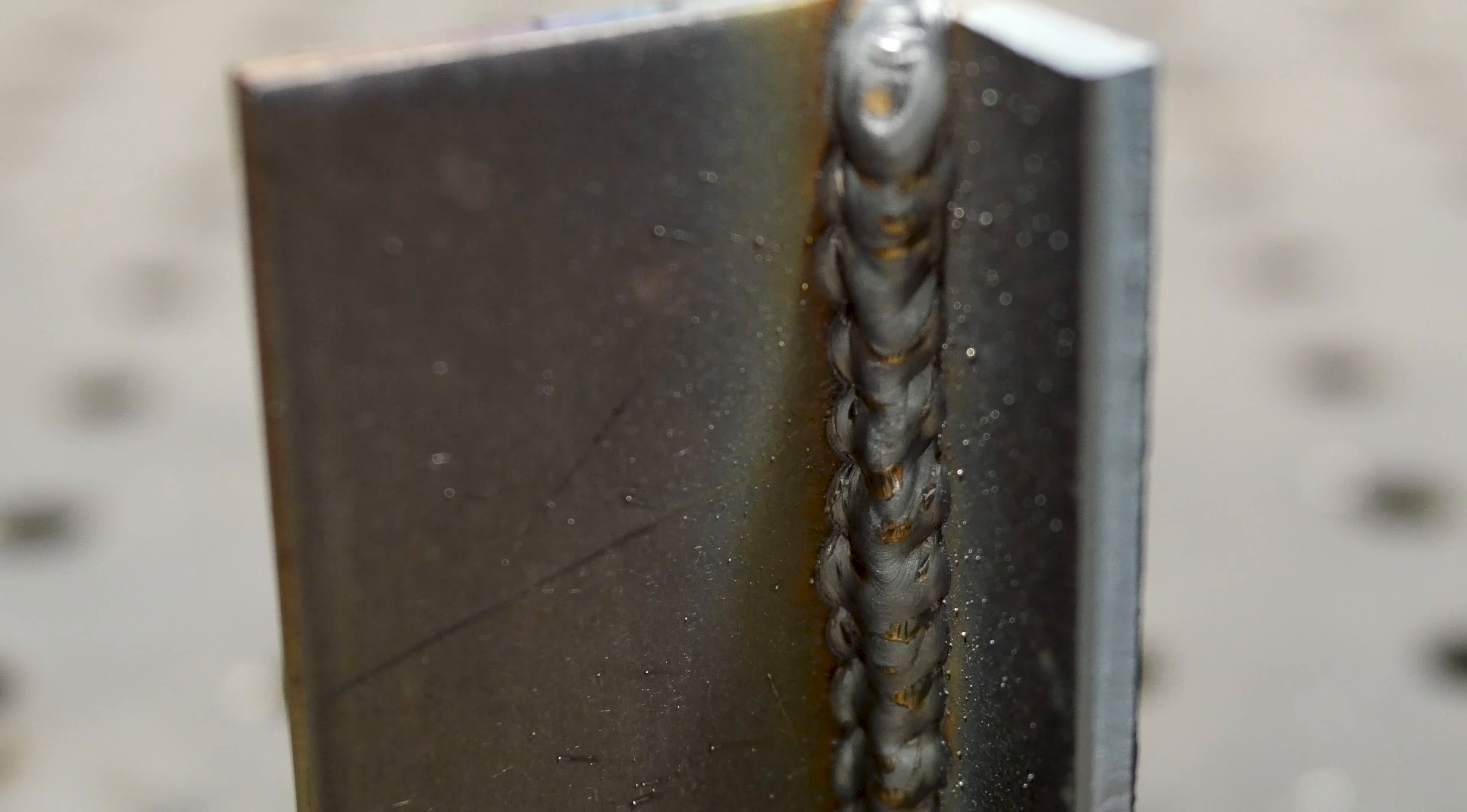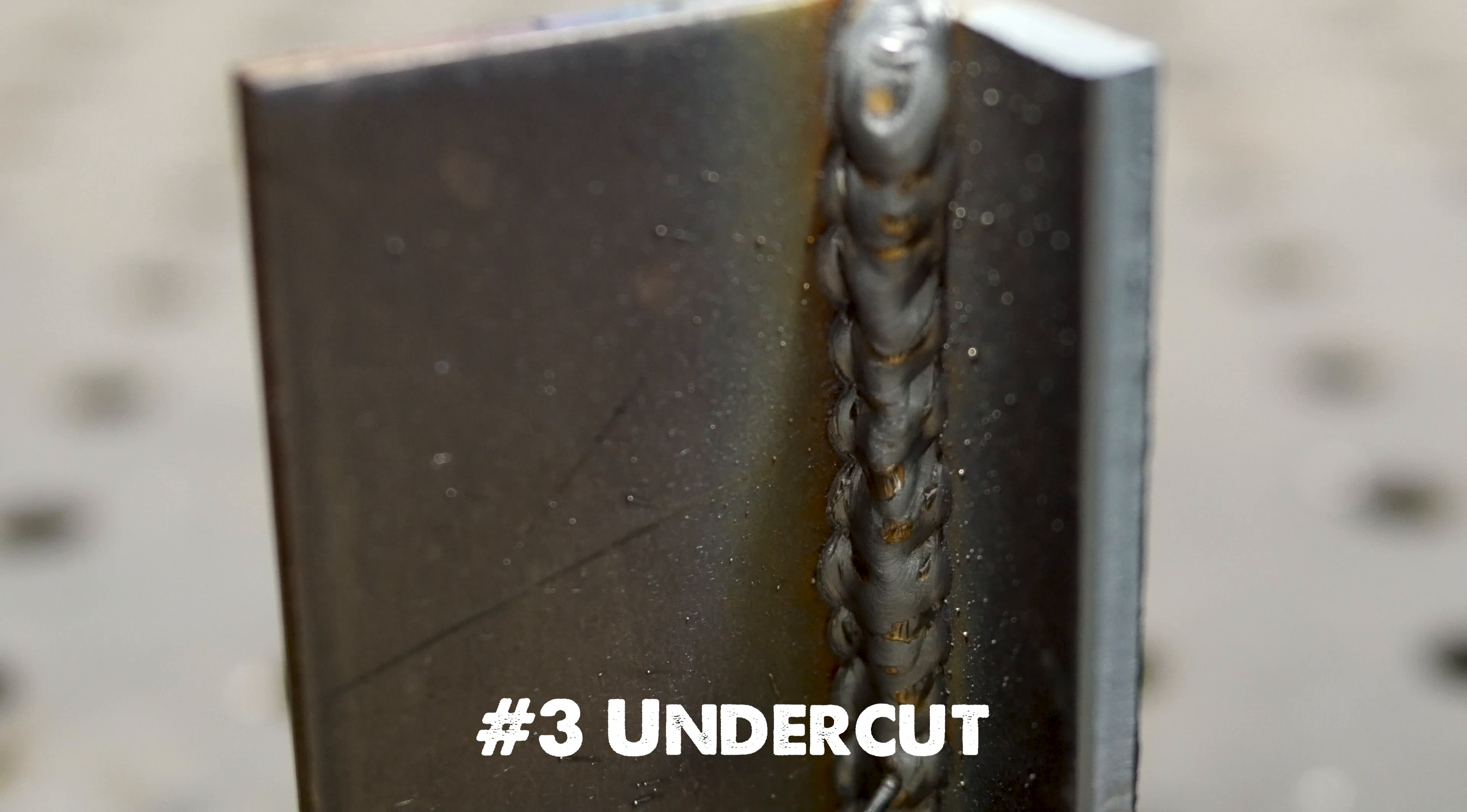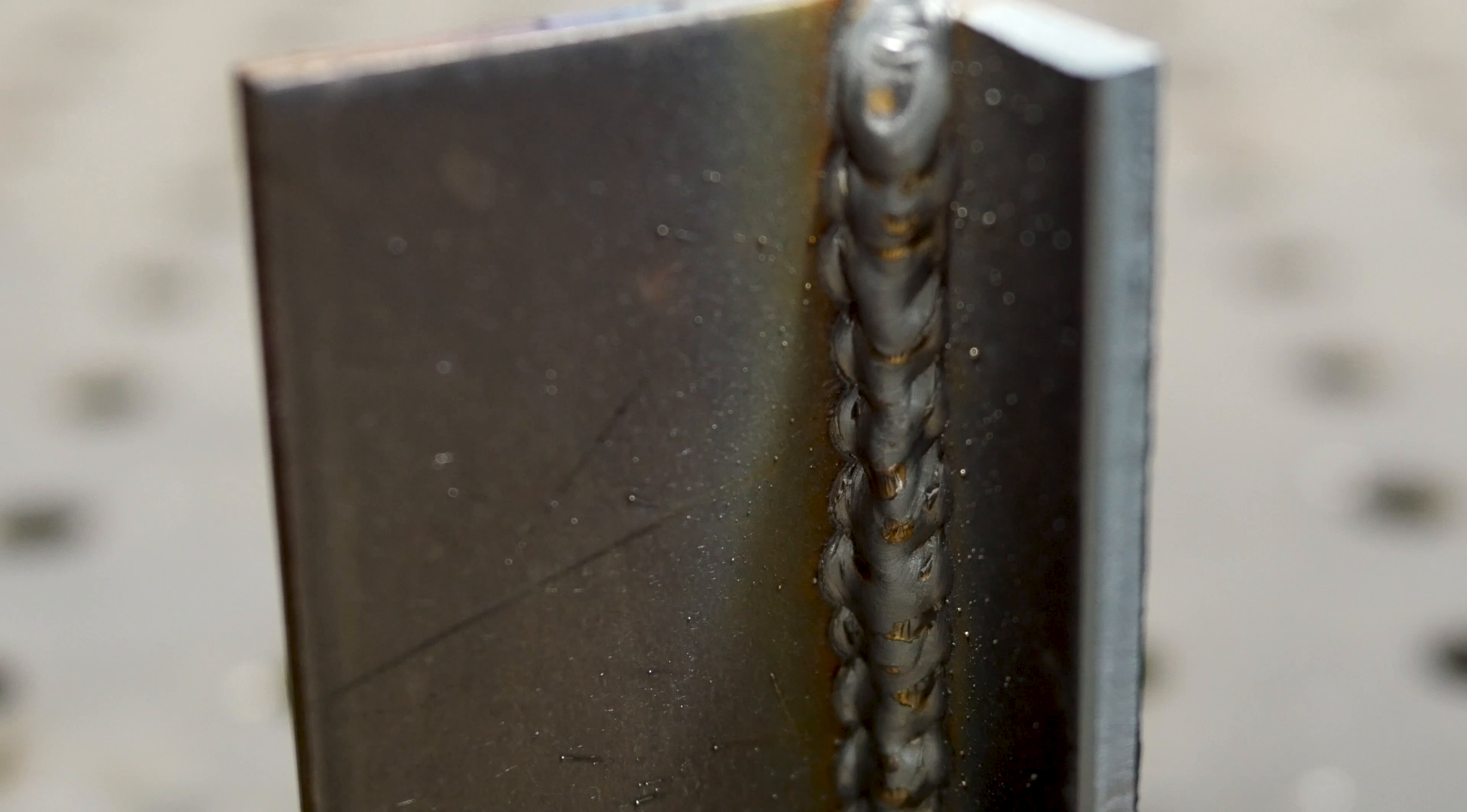The third way to see if your weld is good or not is to look for undercut. Undercut is where the arc dug out the base metal, but it didn't get filled back in either by going too fast or not pausing long enough like in this case where we're going vertical up. We didn't pause long enough on the sides and we waited too long in the middle.